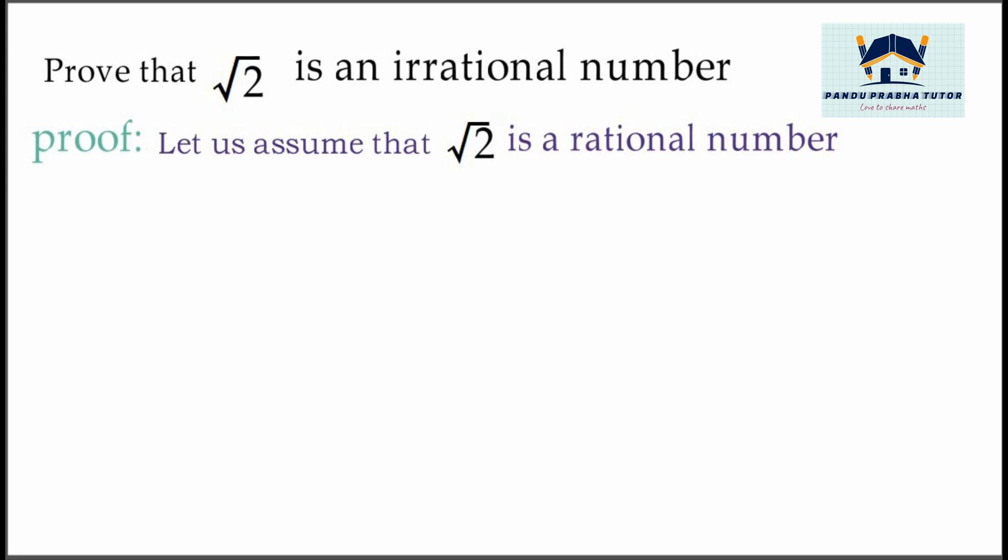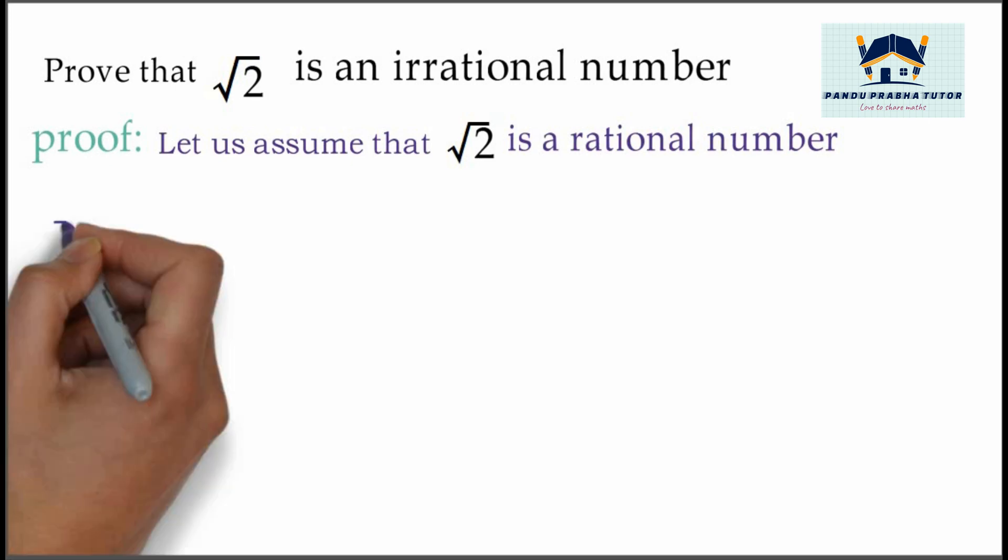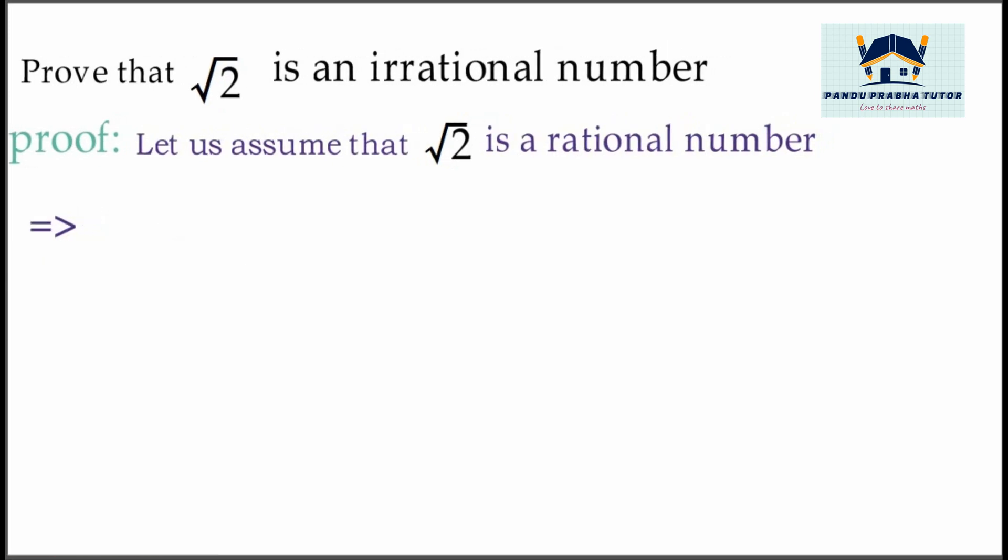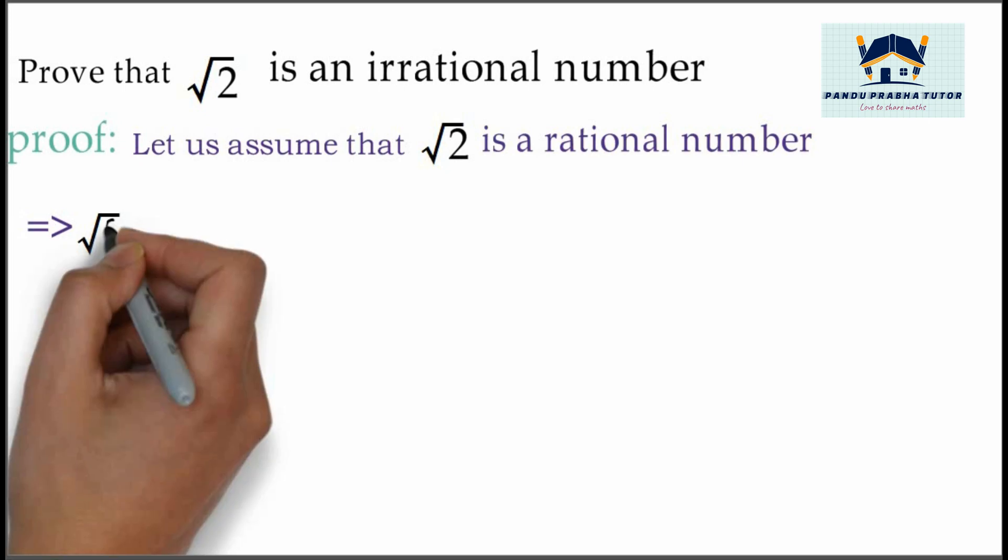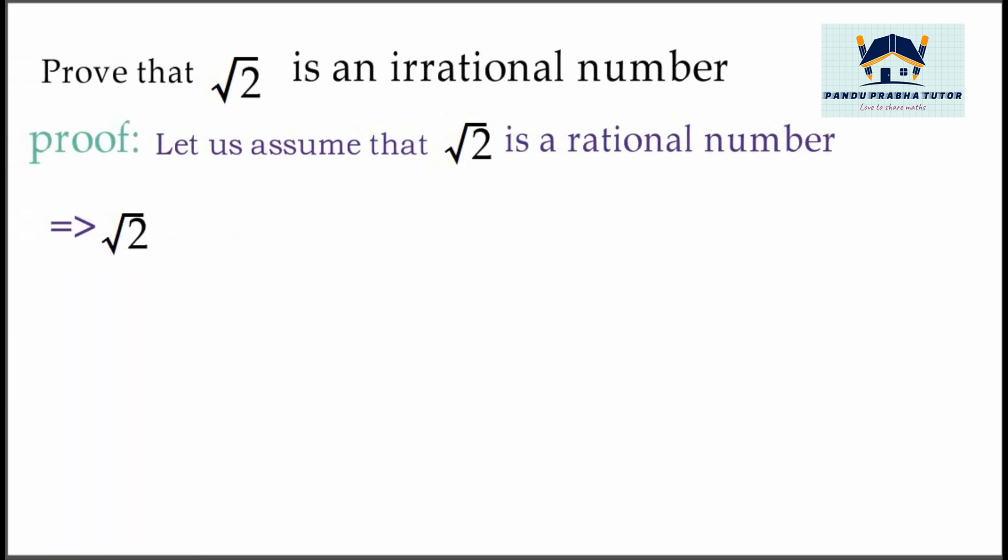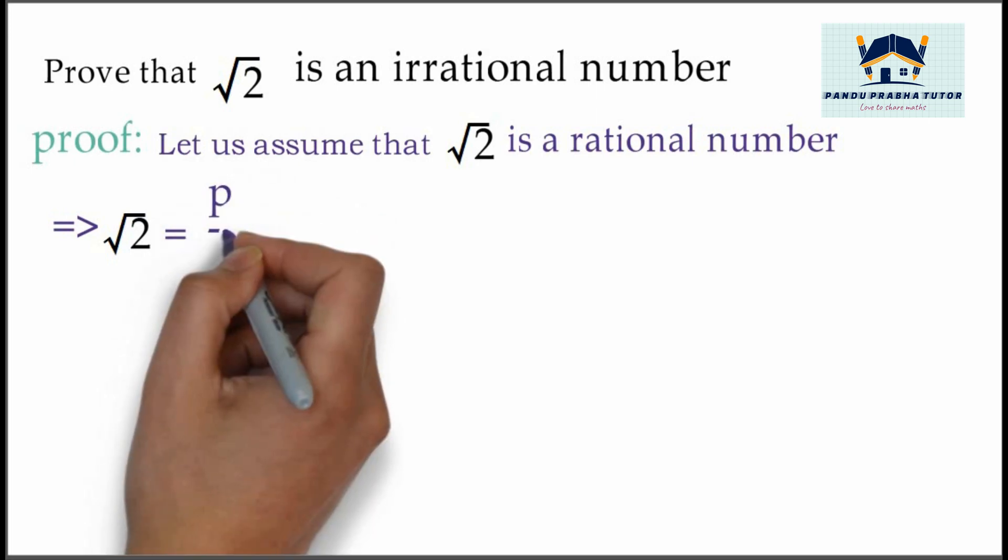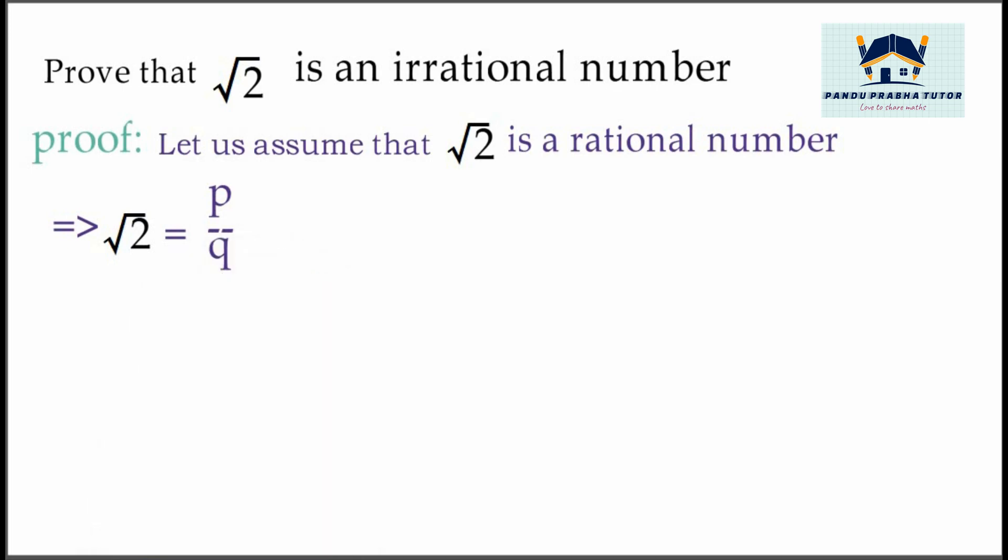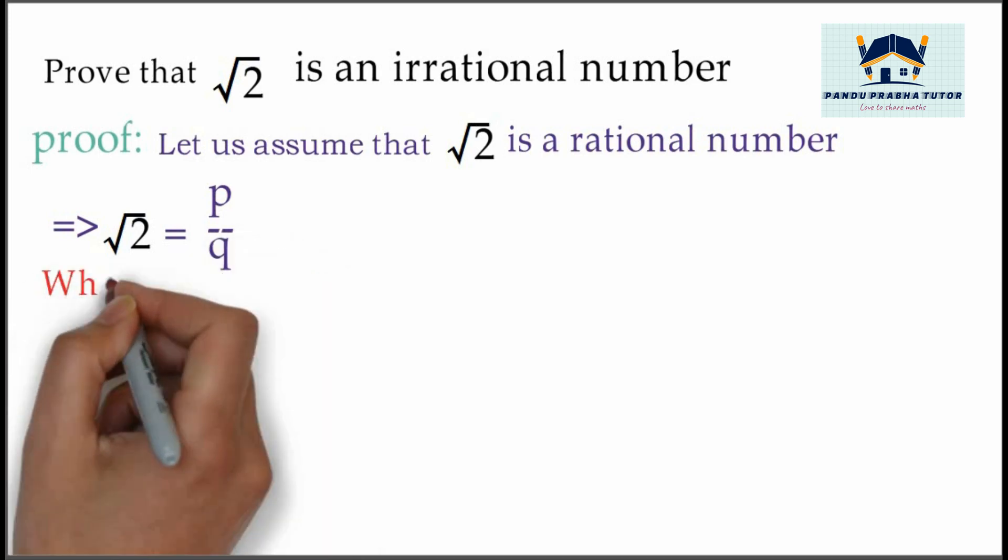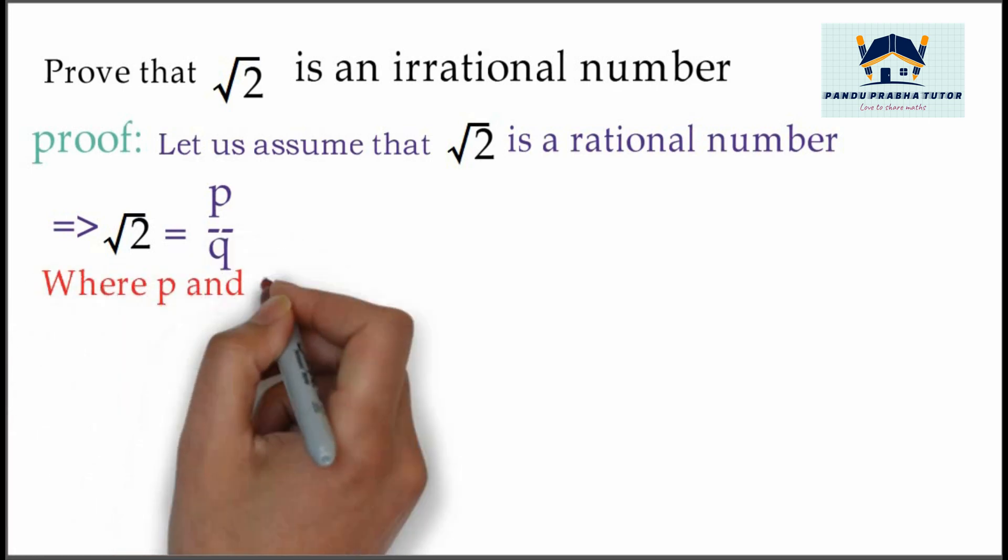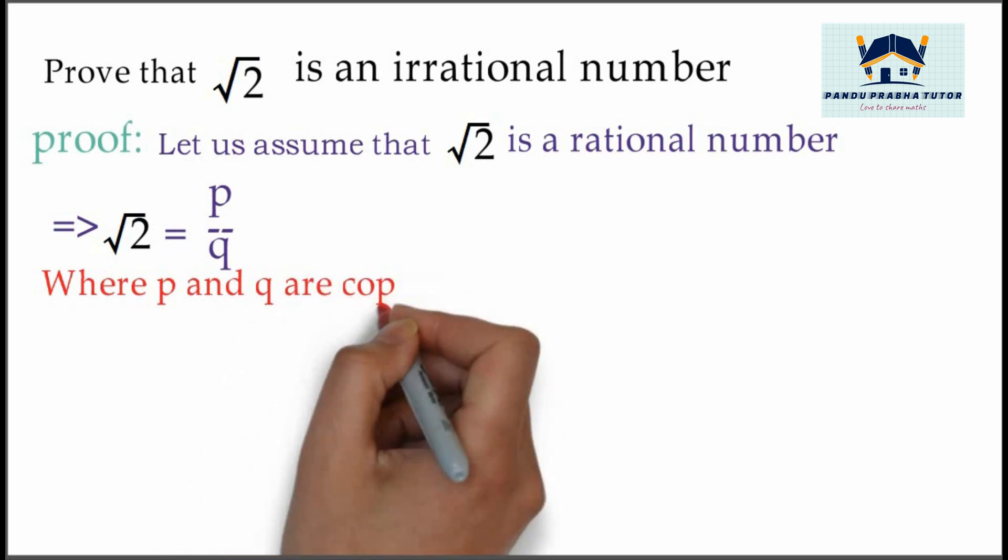A rational number can be expressed in the form p divided by q. Therefore, √2 equals p divided by q, where p and q are co-primes.